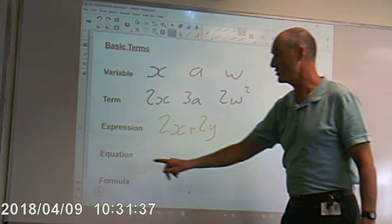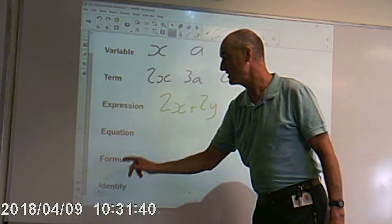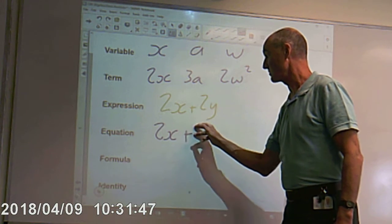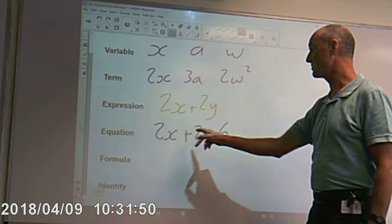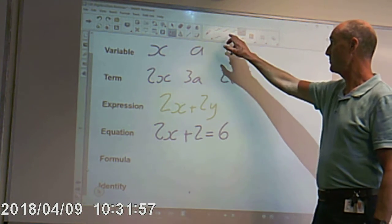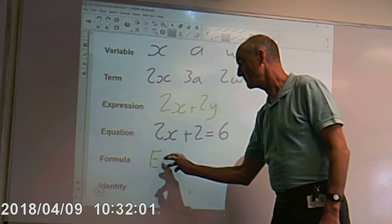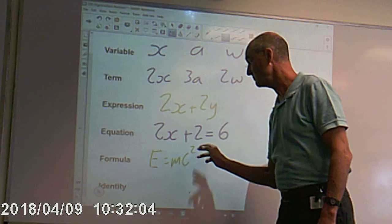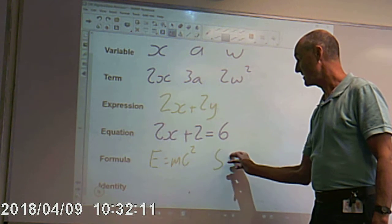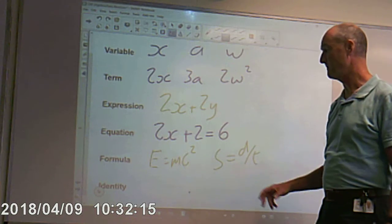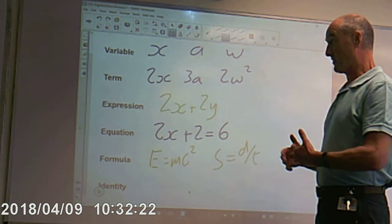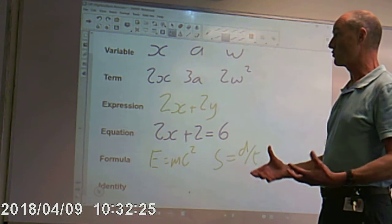An equation — it's going to have an equal sign in it. So, 2x plus 2 equals 6 is an equation. An equation that we can solve — it's got an equal sign in it. And a formula. Probably the most famous formula you're aware of is E equals mc squared — Einstein's formula. But it could be just something like speed equals distance divided by time. It's something that you can actually use in practical circumstances, maybe in science or construction or something like that.